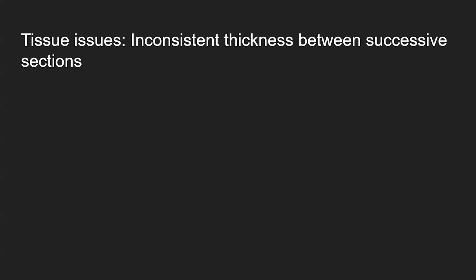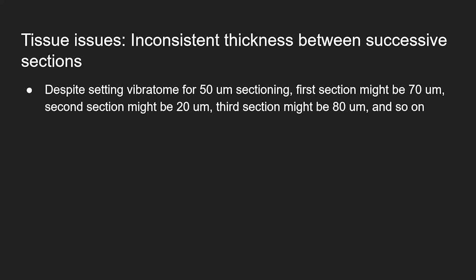The biggest issue is inconsistent thickness between successive sections. When you set the Vibratome to provide slices — which I refer to as sections — at a specific number like 50 micrometers, you expect most sections to be about 50 micrometers thick with very little difference between them. But a bad sectioning run can have wildly variable sections: the first might be 70 micrometers, the next 20, the next 80 — oscillating thick, thin, thick, thin. It might not even alternate reliably; you could get two thin sections and one thick at random.